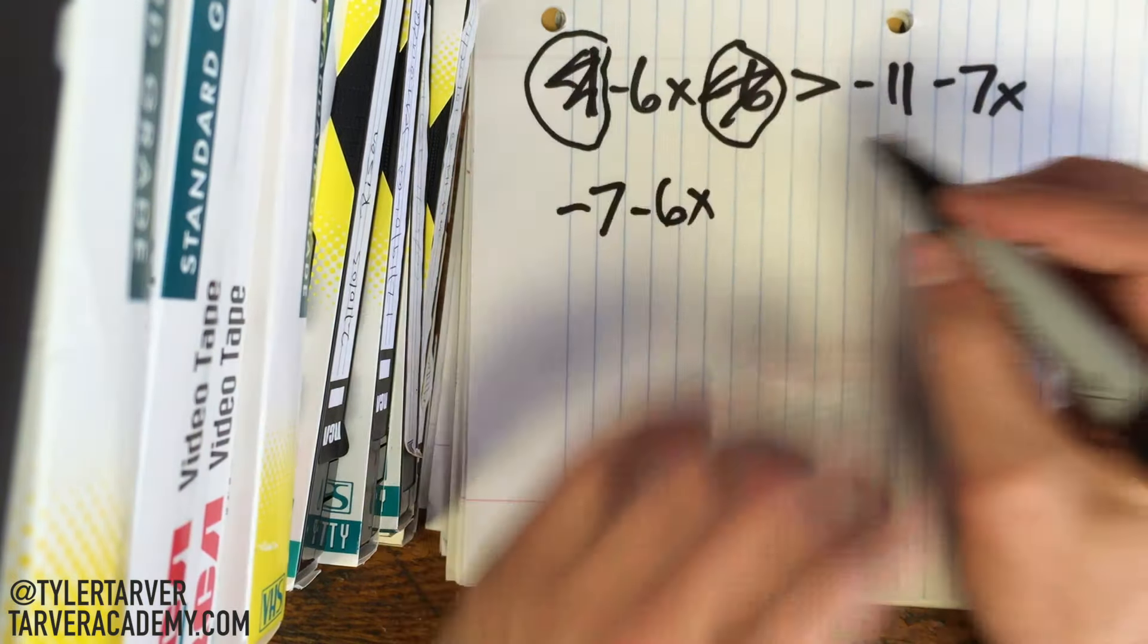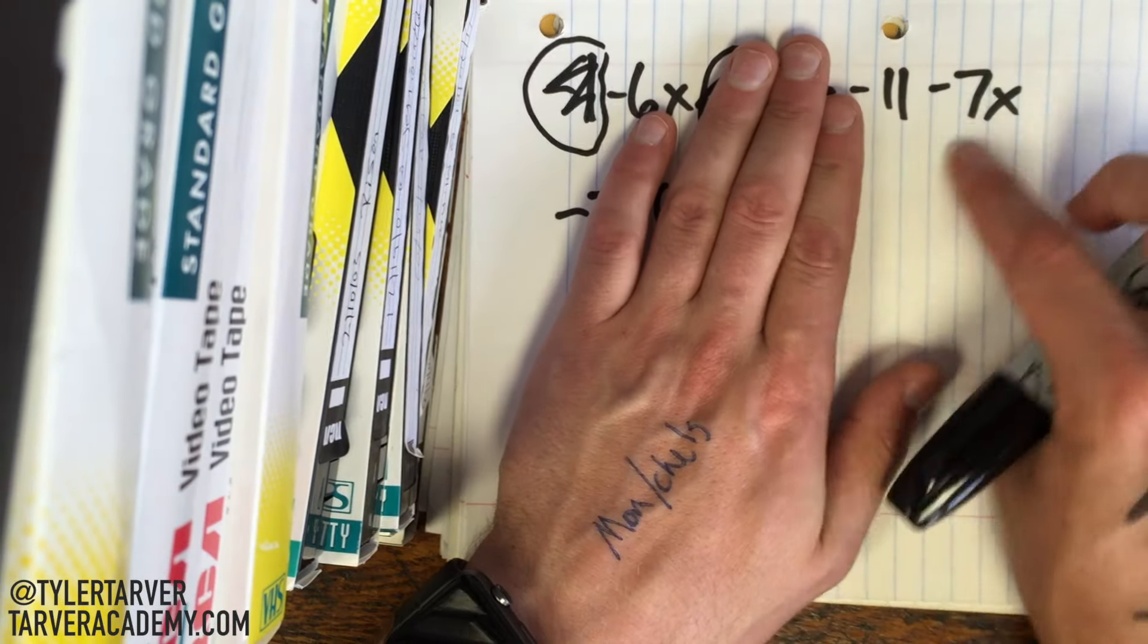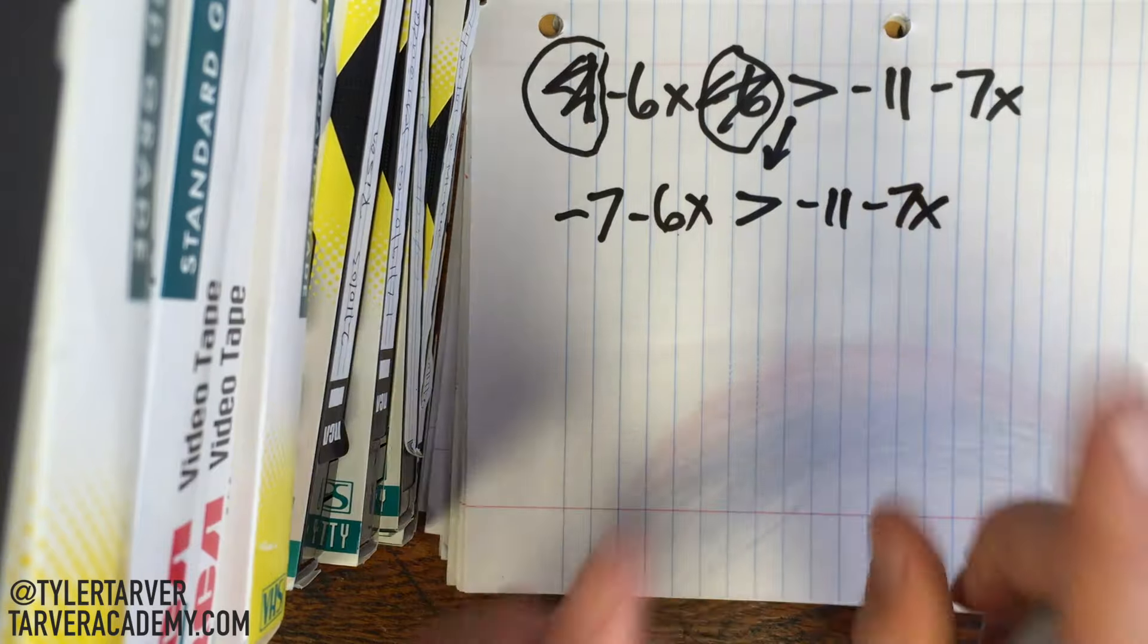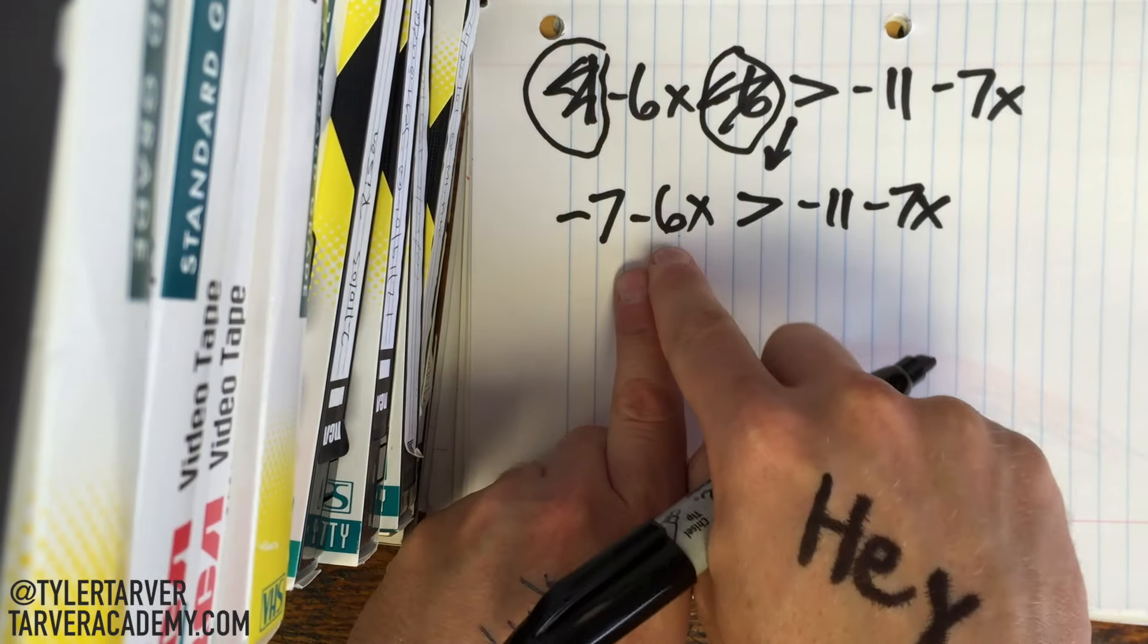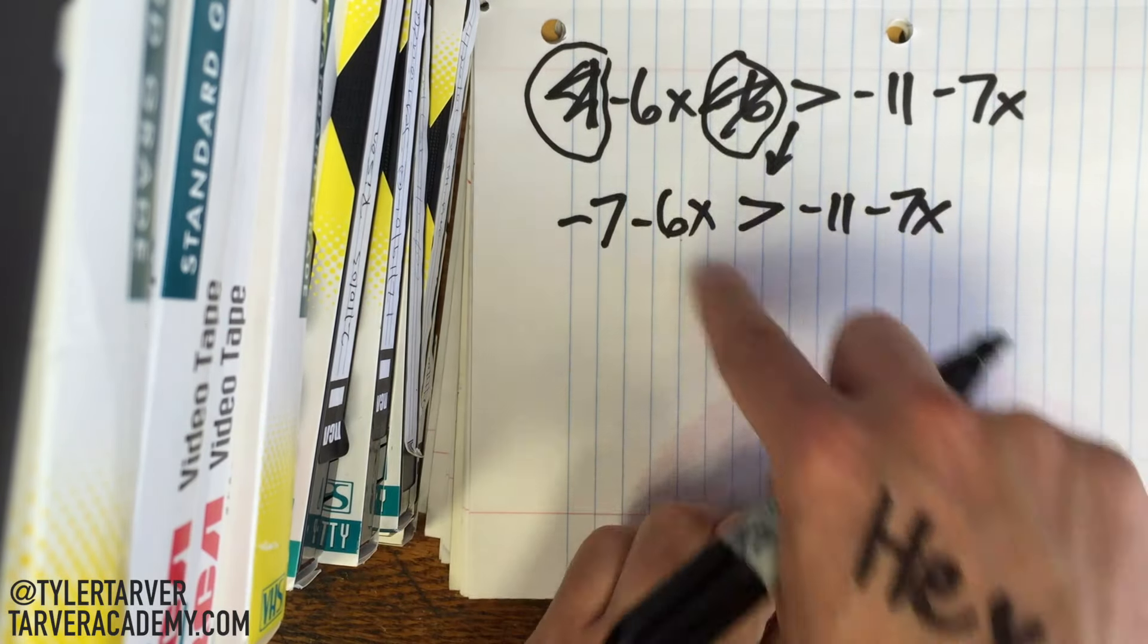All right, now we look at the other side. I'm going to bring down my inequality. And then we'll look over here. Can we combine those? No, we can't. So let's leave them like they are. Now we want to get our x's to the same side. Okay, I like to get the lower x to the other side. I'm sorry, this would be the lower x, wouldn't it? Lower x to the other side.